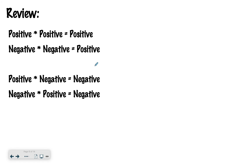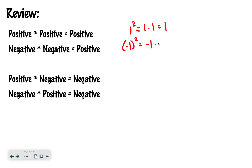Now we're going to pause from new material and do a quick review from the beginning of chapter 3. We talked about multiplication and division rules for positives and negatives. A positive times a positive, or a negative times a negative, gives a positive number. A positive times a negative is negative, and a negative times a positive is negative. So if I say 1 squared, that's 1 times 1, which is 1. If I say negative 1 squared, that's negative 1 times negative 1 — negative times negative is positive. So whenever you square a number, no matter what, you're going to have a positive number as your answer.